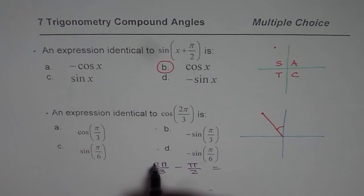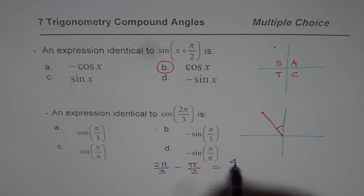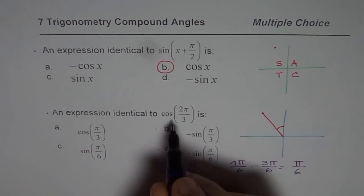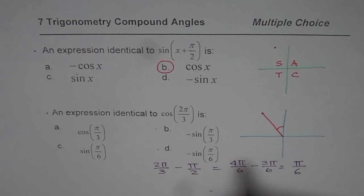For common denominators, multiply this by 2, you get 4π/6 minus multiply this by 3, 3π/6, which gives you π/6. Since cos is negative here, we are looking for negative answers with acute angle of π/6. So the answer is d for us.